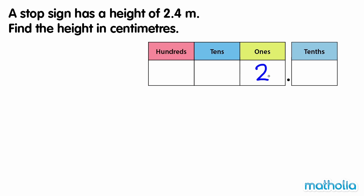Let's write the height in a place value chart. In 1 metre, there are 100 centimetres, so to convert from metres to centimetres, we multiply by 100. We can multiply by 100 by shifting the digits in the place value chart two places to the left.